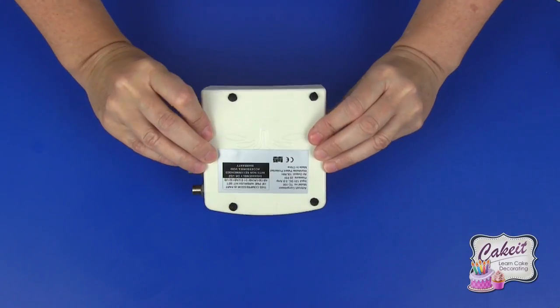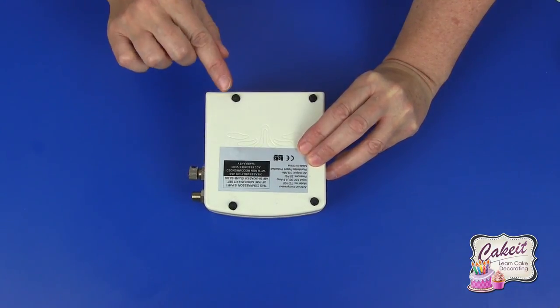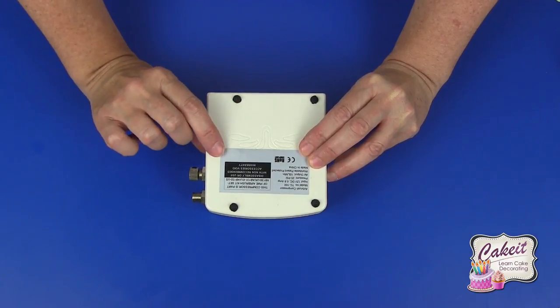First of all if we start with the compressor, I'm just going to turn that over so that you can see four rubber feet on the underside. Make sure that these are secured into the compressor. This will help maintain its steadiness on the work surface.